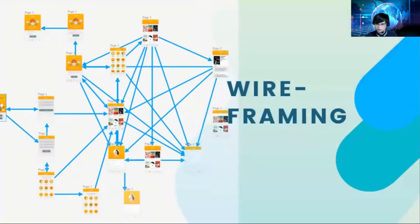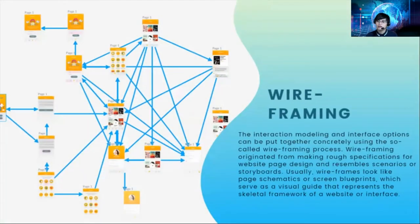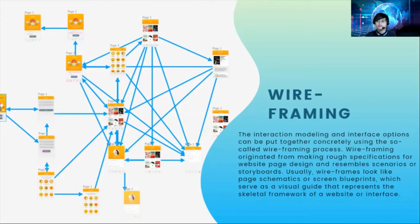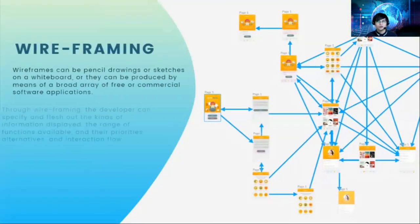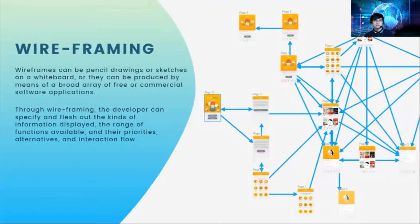When you design an application, it is important to do wireframing. The interaction modeling and interface options can be put together concretely using the wireframing process. Wireframing originated from making rough specifications for website page design and resembles scenarios or storyboards — also called mock-ups. Wireframes look like page schematics or screen blueprints, serving as a visual guide that represents the skeletal framework of a website or interface. Wireframes can be pencil drawings or sketches on a whiteboard.